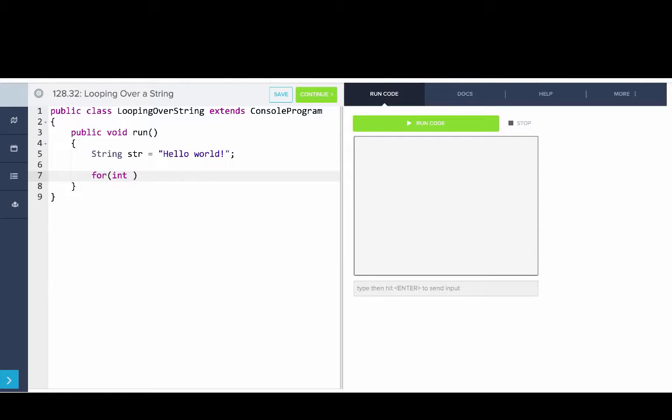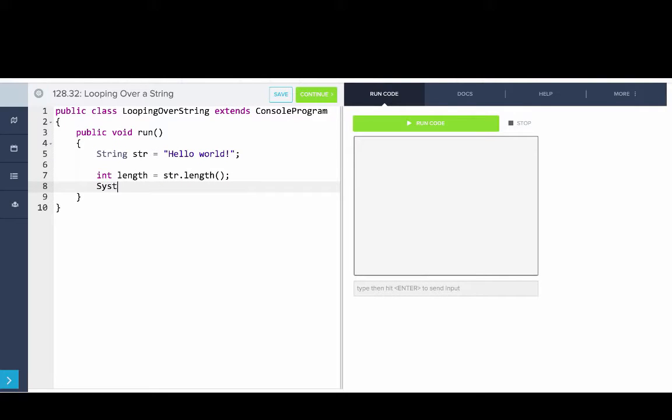So let's say first, actually the first thing we'll do is print out the length of the string. So we'll say int length equals str dot length. So we can say a system dot out dot print line length. And you guys can see that the length of the string is 12 characters.